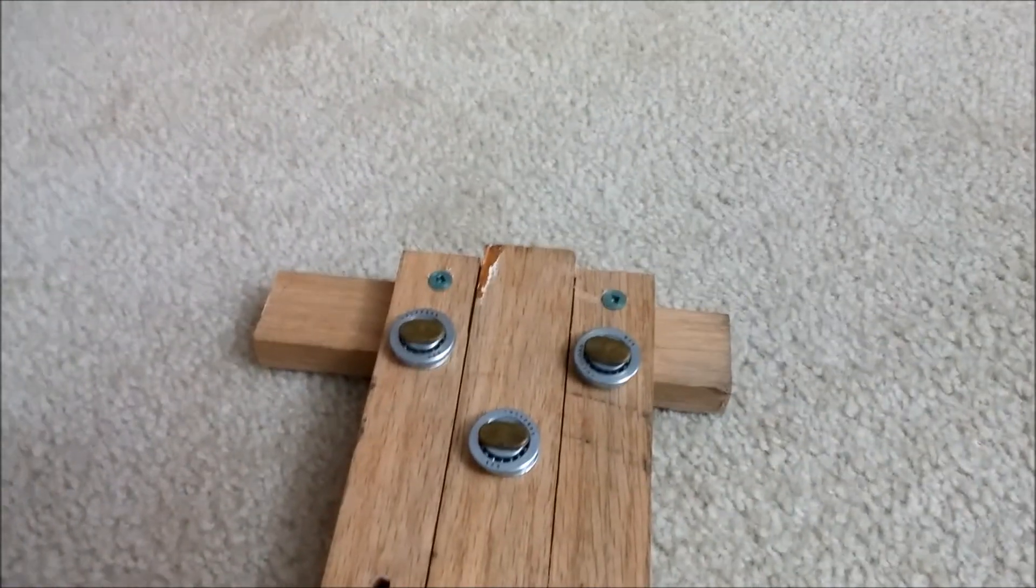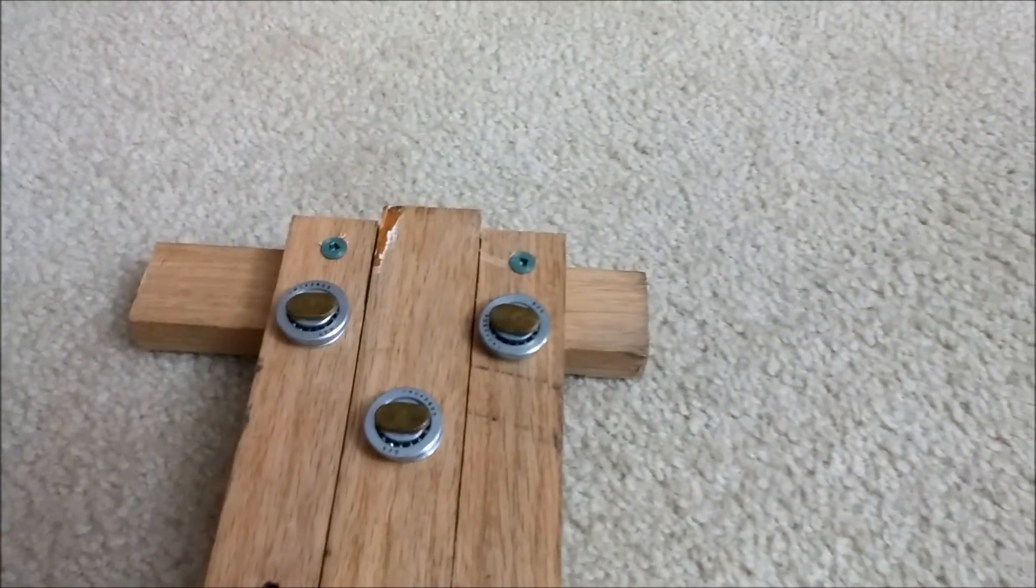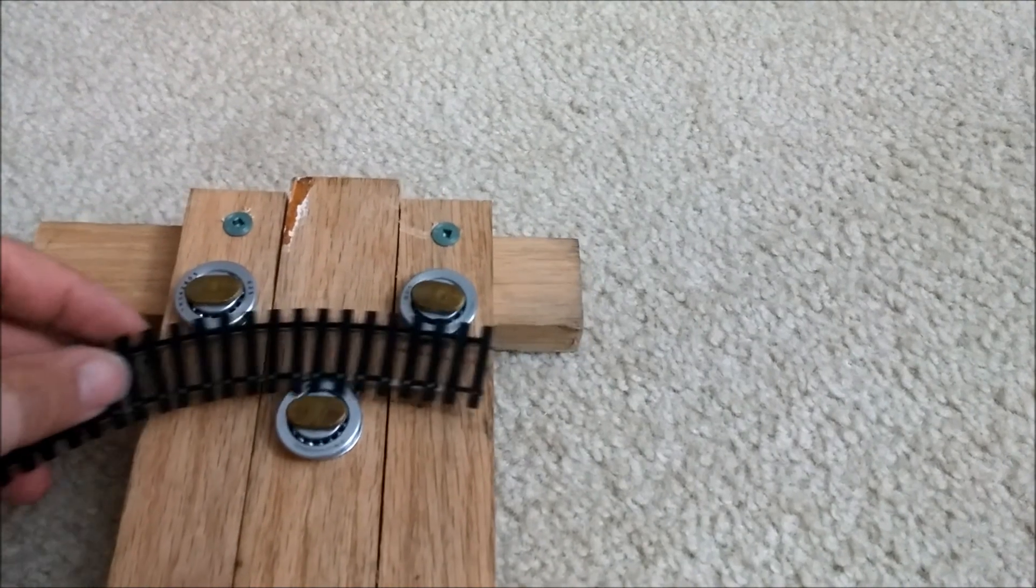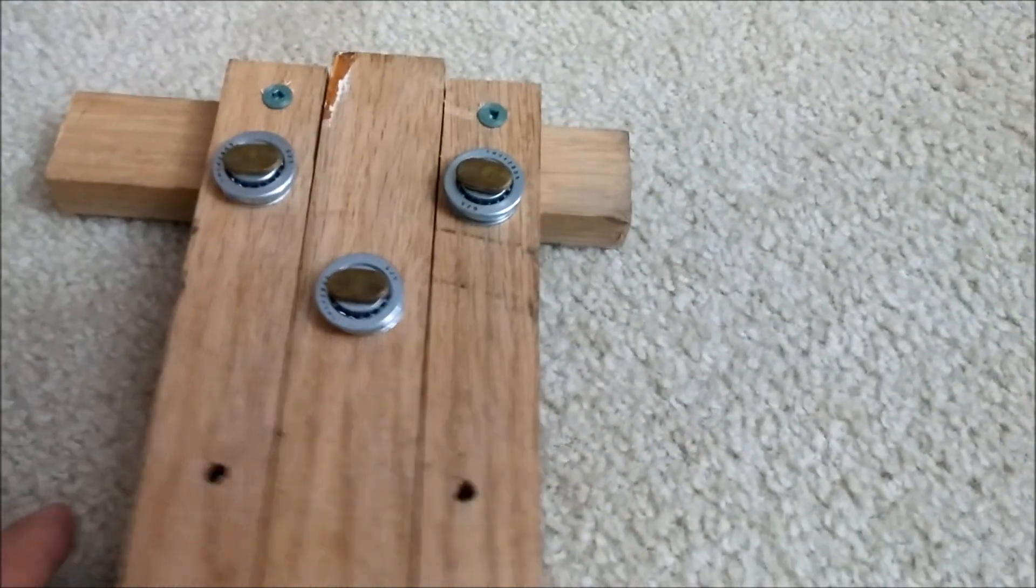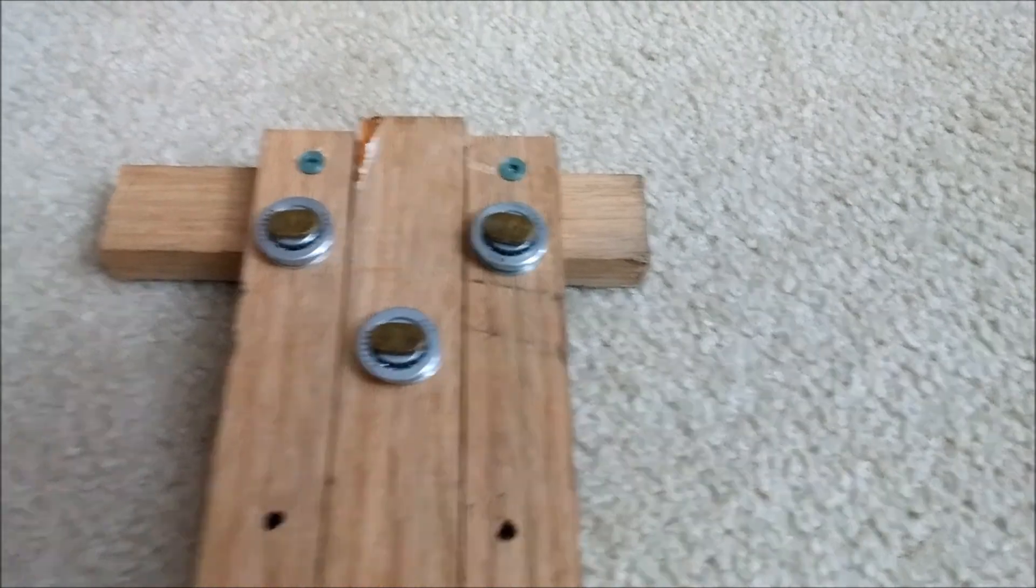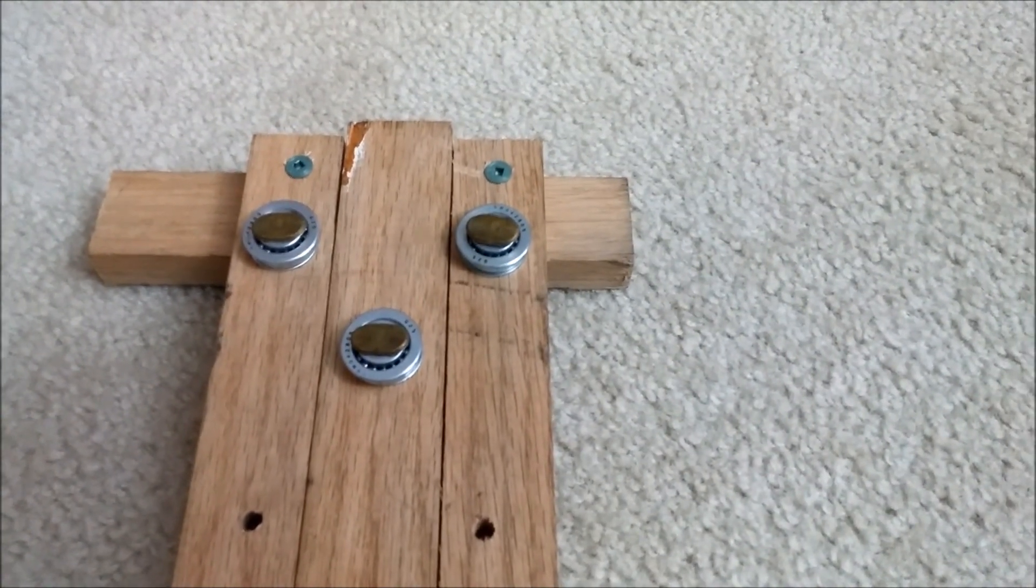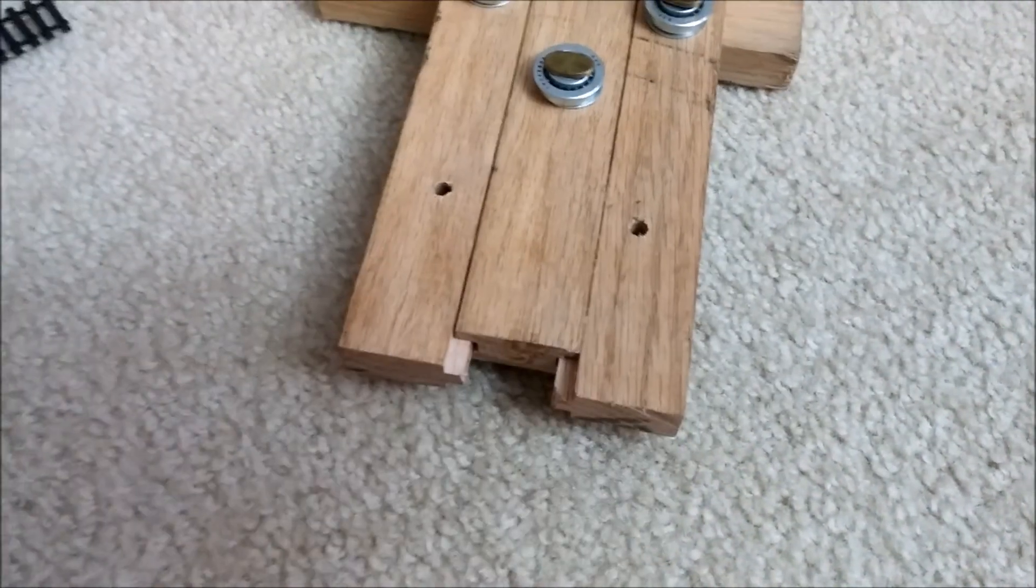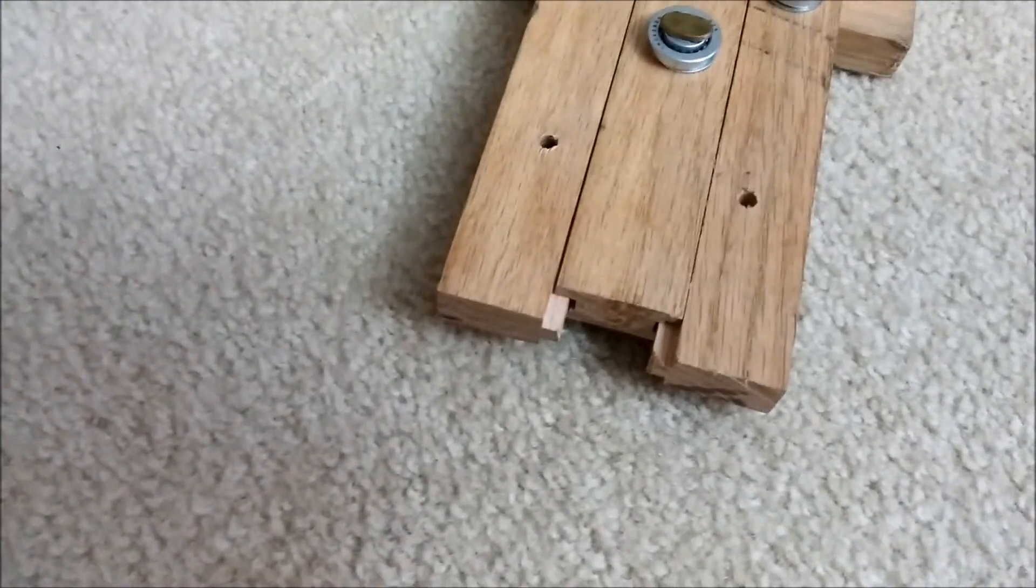Those are toilet bowl bolts. The reason I use those is because they have the nice flat head, so it makes it easier to roll the track. Once again, get the track in between there. I did have to use a hammer to pound this through. Eventually I'll make something to where it has some kind of a bolt or something that I can turn to loosen or tighten it.